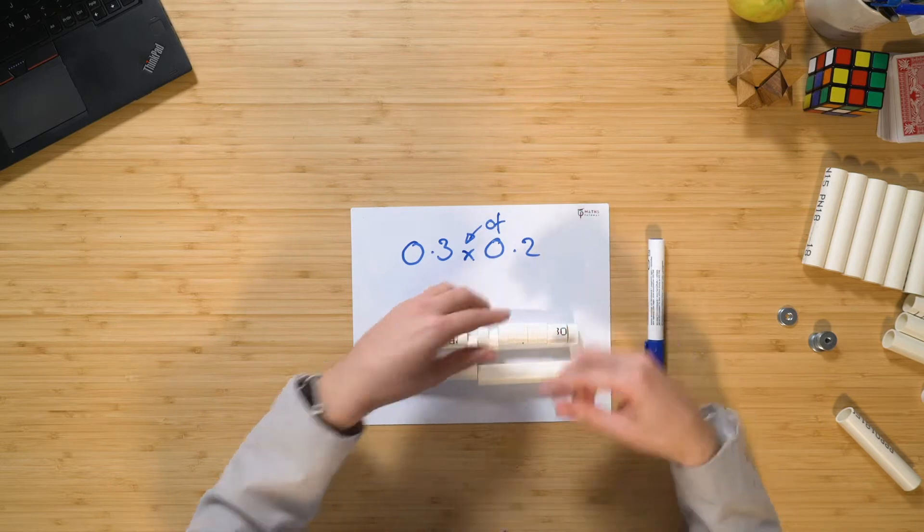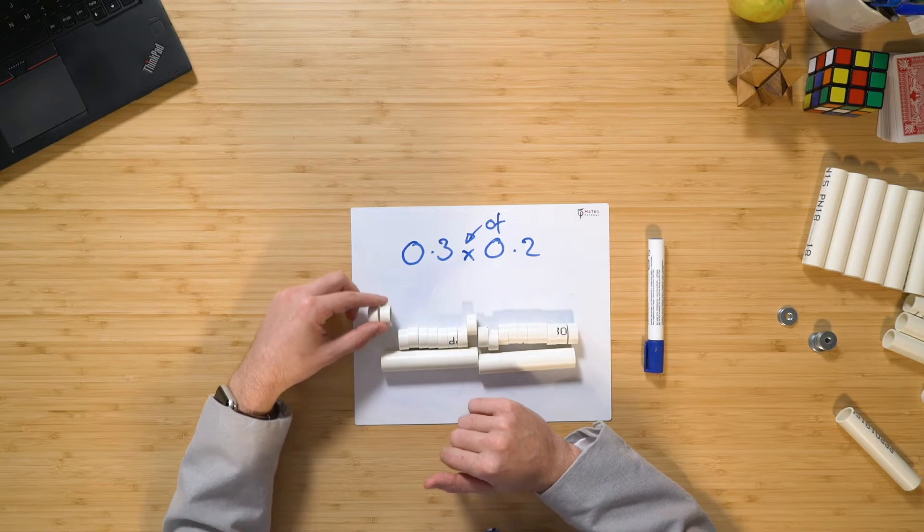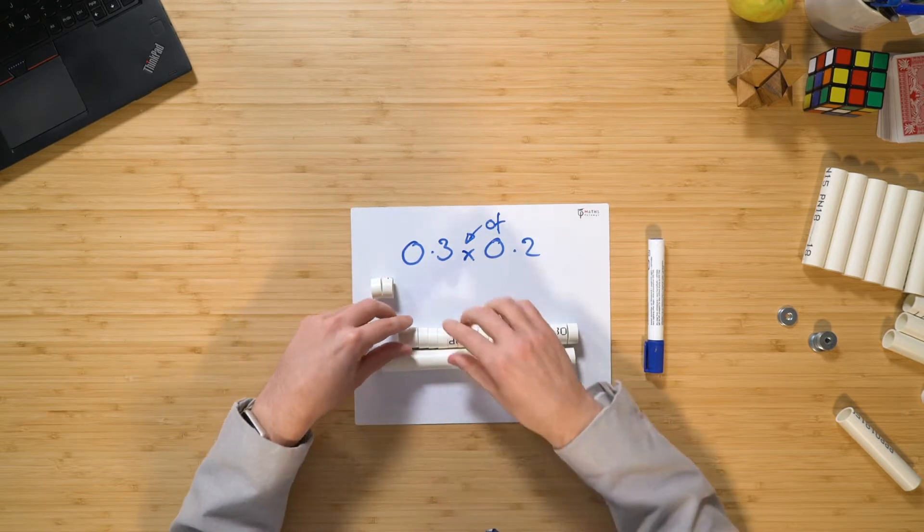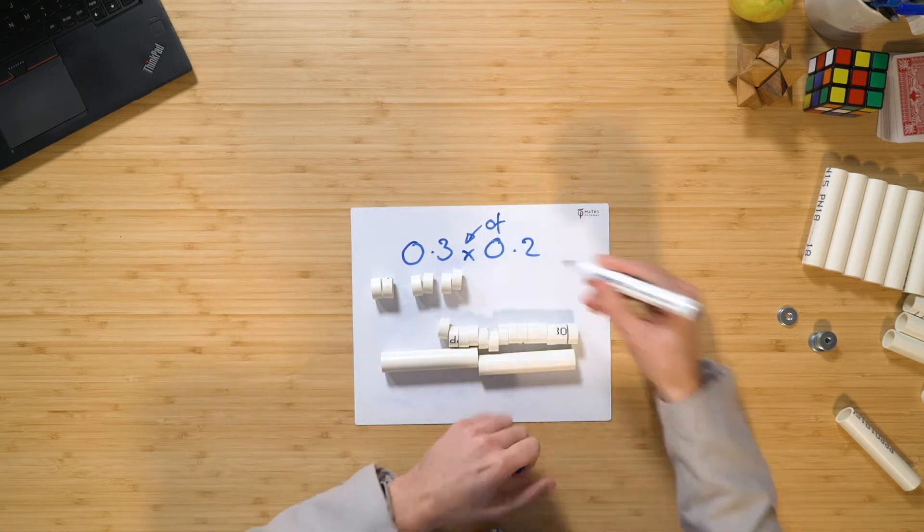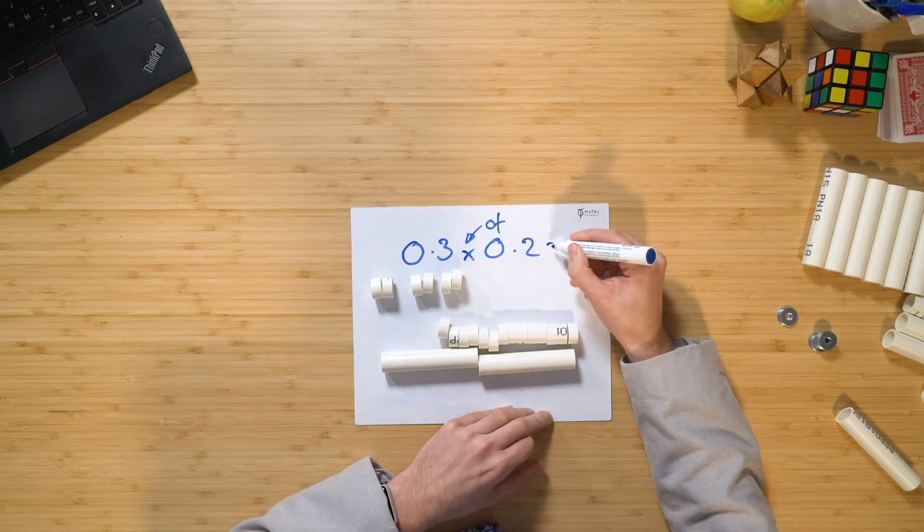So two tenths really is twenty hundredths. Now, if I think about that, one tenth of that is equal to two hundredths. So therefore, three tenths would be six hundredths. Therefore, three tenths of two tenths is equal to six hundredths.